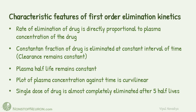This completes all the points. Quick revision: in first order elimination kinetics, rate of elimination of drug is directly proportional to plasma concentration; constant fraction of drug is eliminated at constant interval of time, or in other words clearance remains constant; plasma half-life remains constant; the plot of plasma concentration against time is curvilinear; and a single dose of drug is almost completely eliminated after 5 half-lives. One more point: most drugs at therapeutic concentration follow first order kinetics.